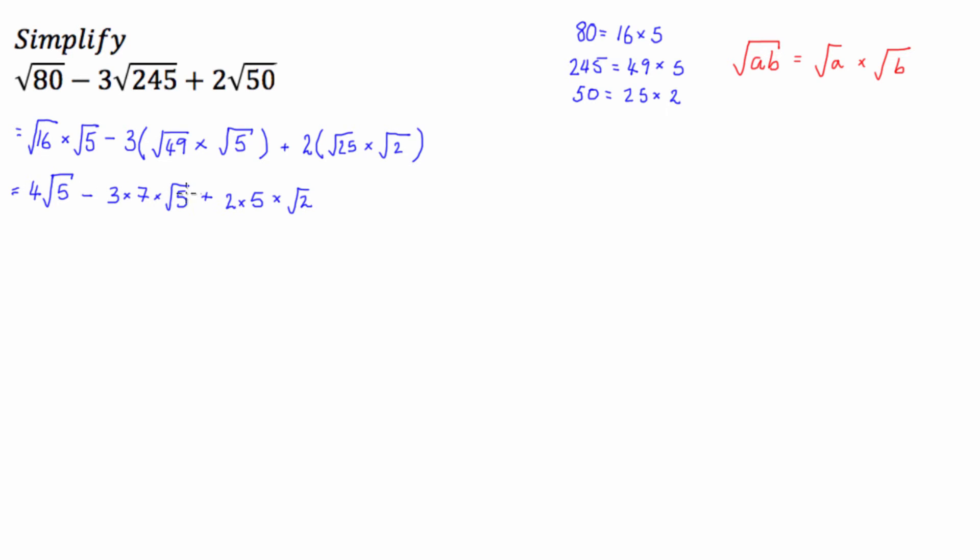Cool. So now we've done that, we can just multiply these numbers out. You don't have to do anything with the first one. Now, minus 3 times 7 is minus 21. 2 times 5 is 10.